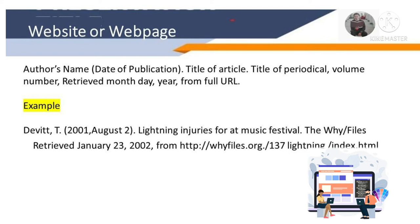For website or web pages, the pattern is: author's name, date of publication, title of article, title of periodical, volume number, retrieved month, day, year, from full URL. Example: David, T. (2001, August 2). Lightning injuries for at music festival. The Y Files. Retrieved January 23, 2002, from [URL].